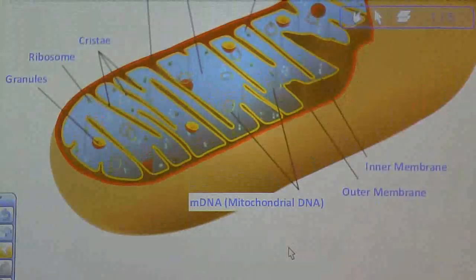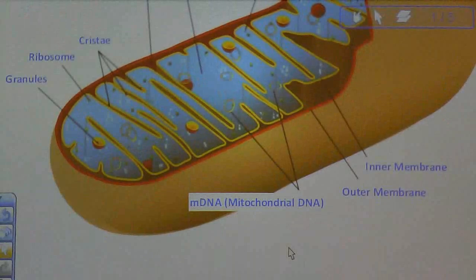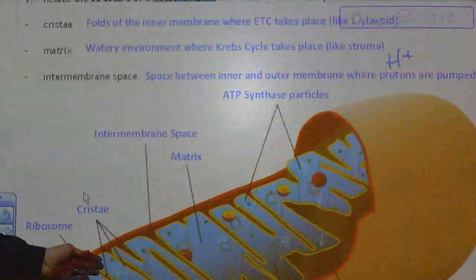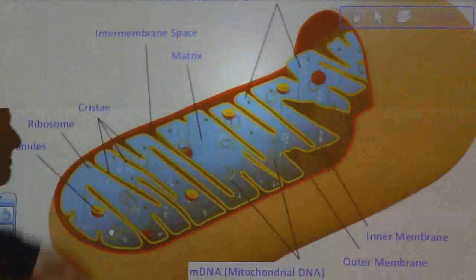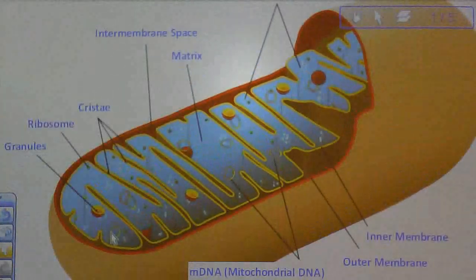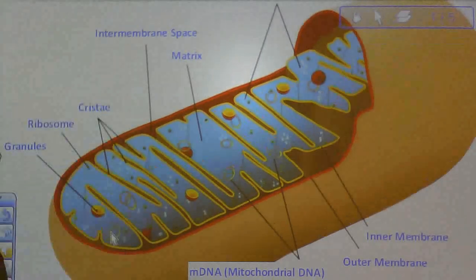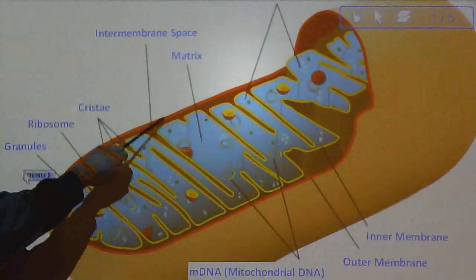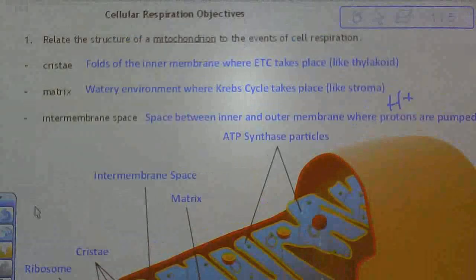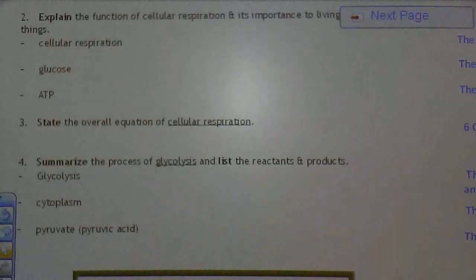The outer membrane and the inner membrane — the inner membrane is made up of those folds called cristae. The most important locations of processes: the cristae are where the ETC takes place, very similar to the ETC we saw in photosynthesis. The matrix is where the Krebs cycle takes place. The intermembrane space is where protons are pumped, which is important for making ATP.